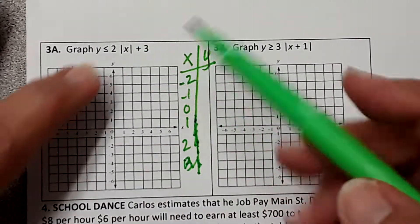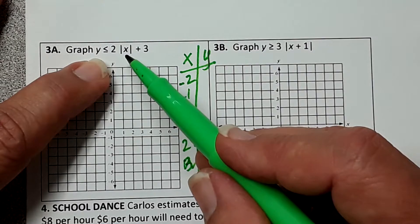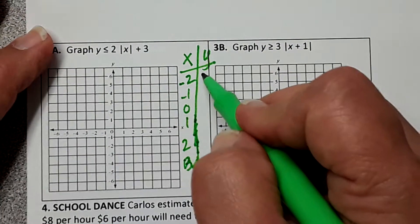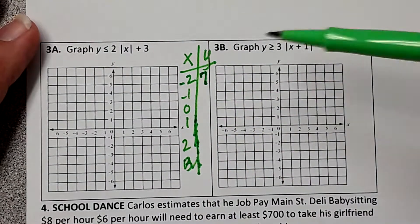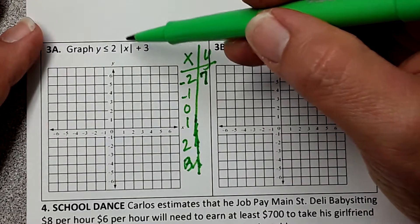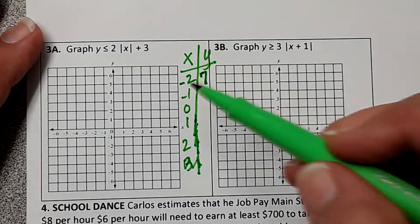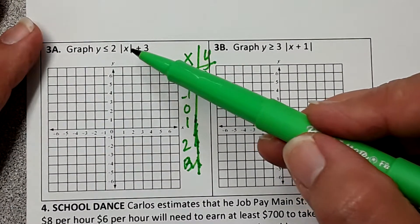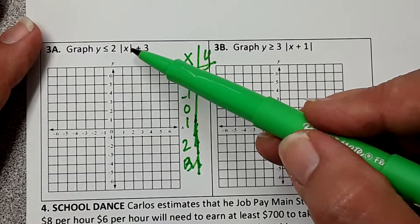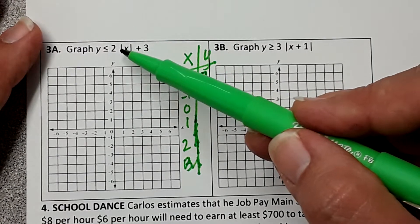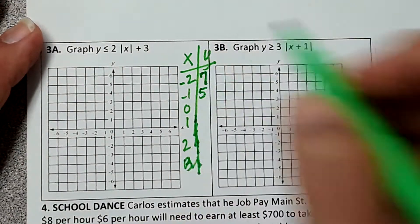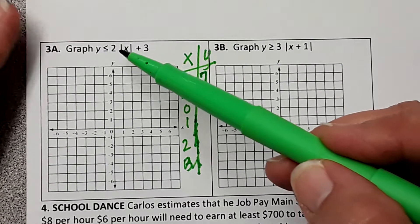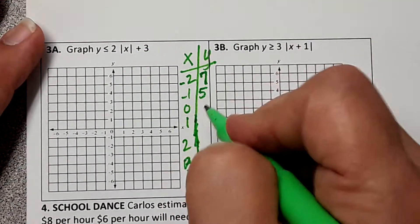So if we plug in negative 2, the absolute value of negative 2 is 2 times 2 is 4, 4 plus 3 is 7. Okay, so the absolute value of negative 2 was 2, 2 times 2 is 4, 4 plus 3 is 7. Now we're going to plug in negative 1. 2 times the absolute value of negative 1, so the absolute value of negative 1 is 1, 1 times 2 is 2, 2 plus 3 is 5.